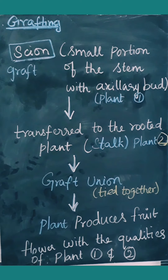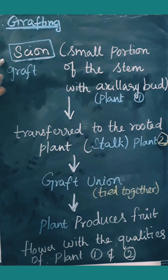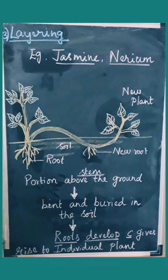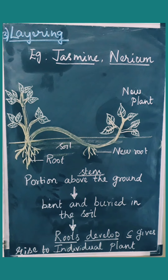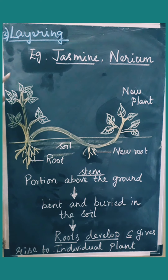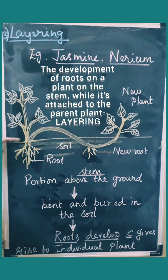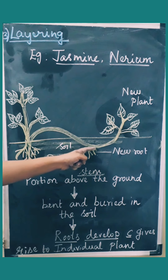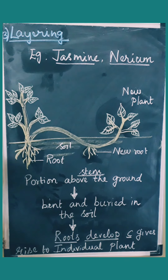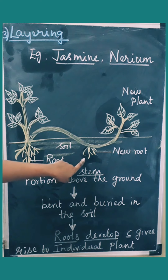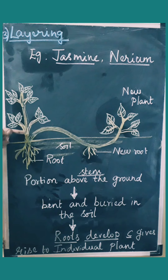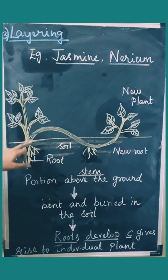The leaves, fruits, and flowers will have the characteristics of both the scion and the stock. The third method of artificial vegetative propagation is layering, which is widely carried out in jasmine and nilium plants. In this method, the portion of the stem just above the ground level is gently bent and buried into the soil. It should not be detached — it still receives nutrients from the parent plant until it gives off its own roots.